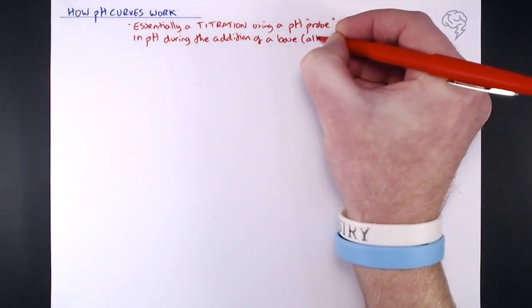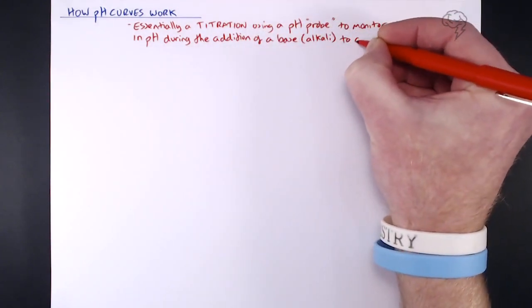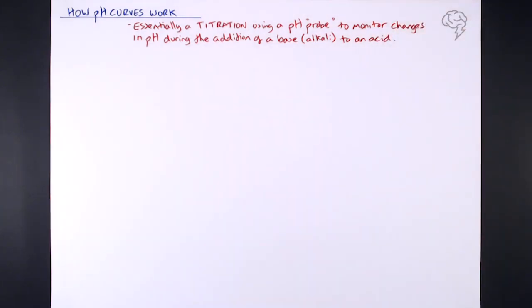Instead of using a rudimental indicator like phenolphthalein just to identify the point at which it's neutralized, what we're doing is monitoring the pH during the addition of the alkali or the base to the acid, so we can see how the pH changes as we add each little bit of alkali to that acid.